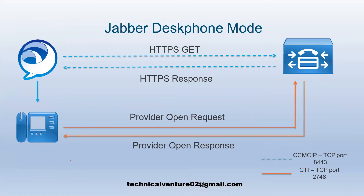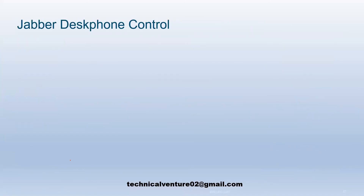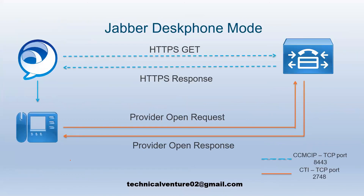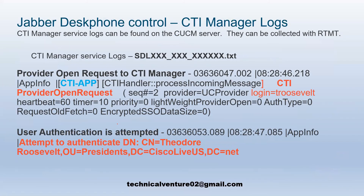For Jabber desk phone control mode, you get two options in Jabber — you can use it as a softphone or control a hard phone. Clicking the down arrow gives you those options. The desk phone control flow involves a DPPS GET response and a provider open request and response, similar to the softphone flow.